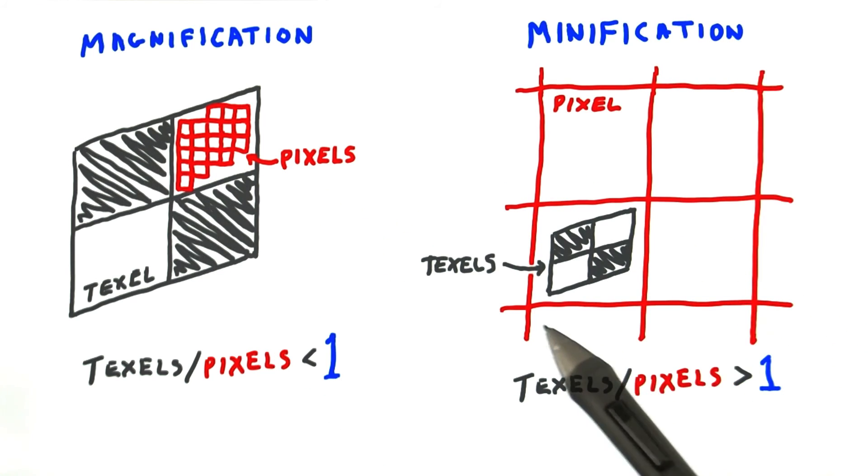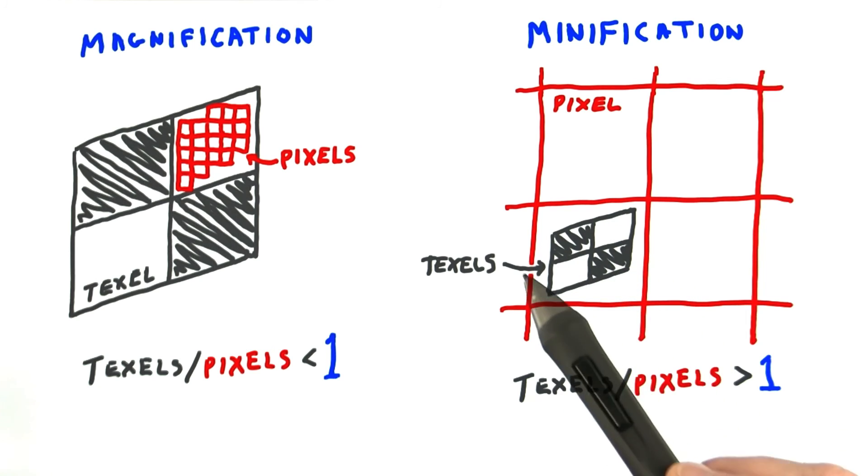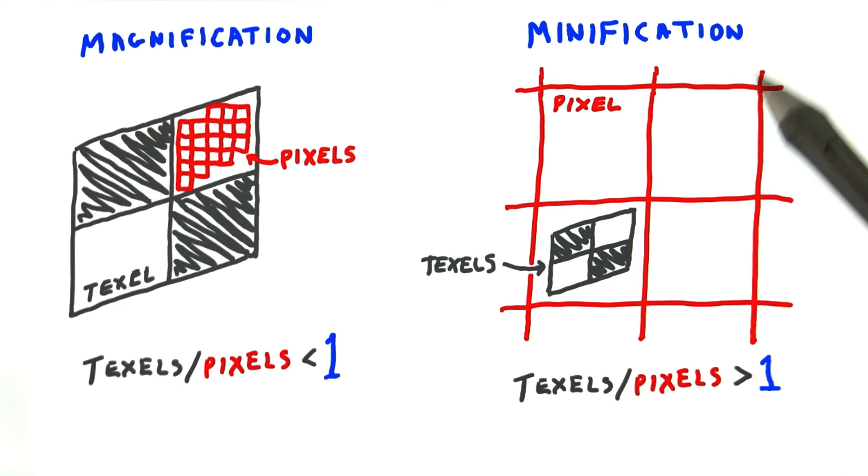Say we zoom out on our 2 by 2 texture and it all falls within 1 pixel. If a texel covers less than 1 pixel, that is, 1 pixel contains more than 1 texel, this situation is called minification. In this situation, the mag filter is not used. We'll deal with minification and how to set the corresponding min filter in the next lesson.